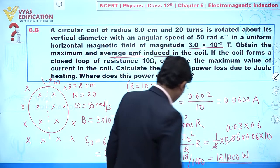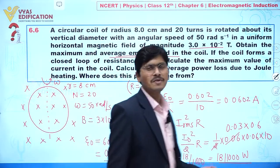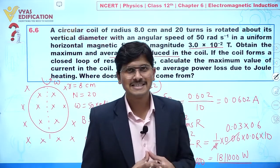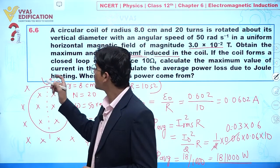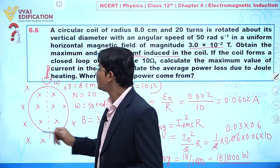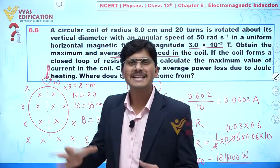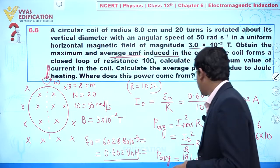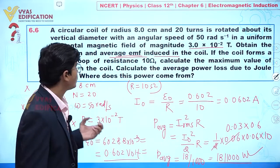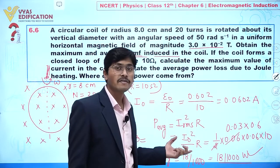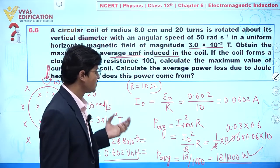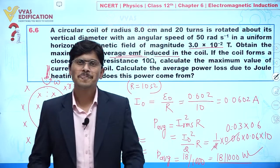This is the average power loss. You can see that the coil is rotated by mechanical means — for example, by a motor — which is an external source supplying energy. That energy is dissipated in the form of heat. So the power loss due to Joule heating is P = I²R = 0.018 watts. That concludes this question.